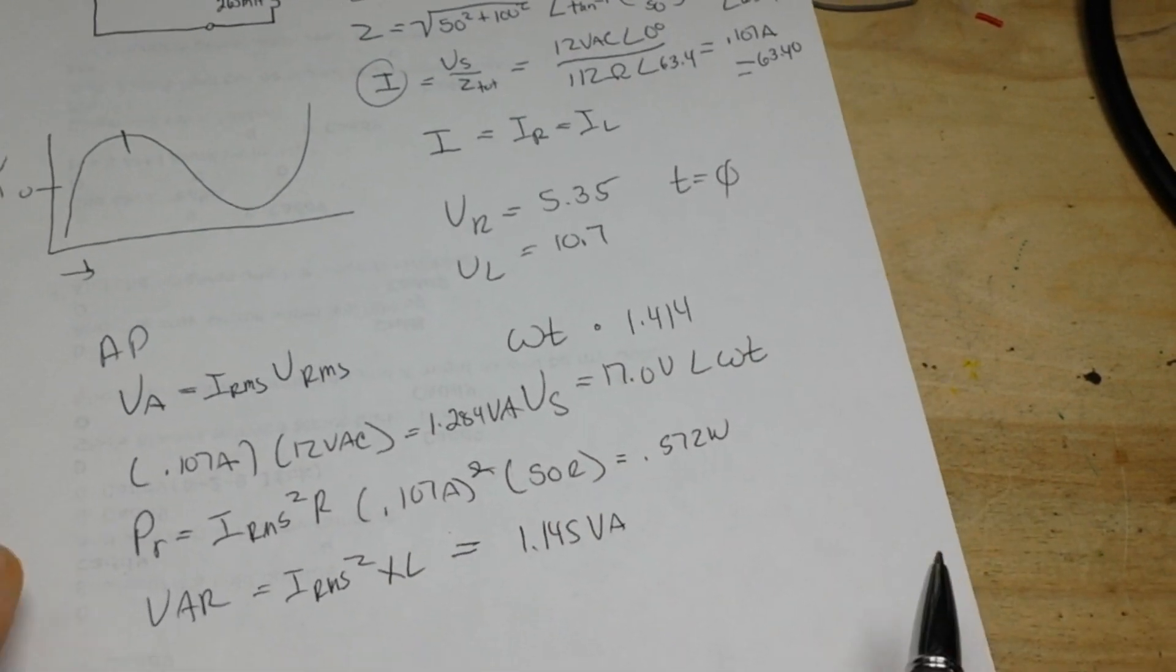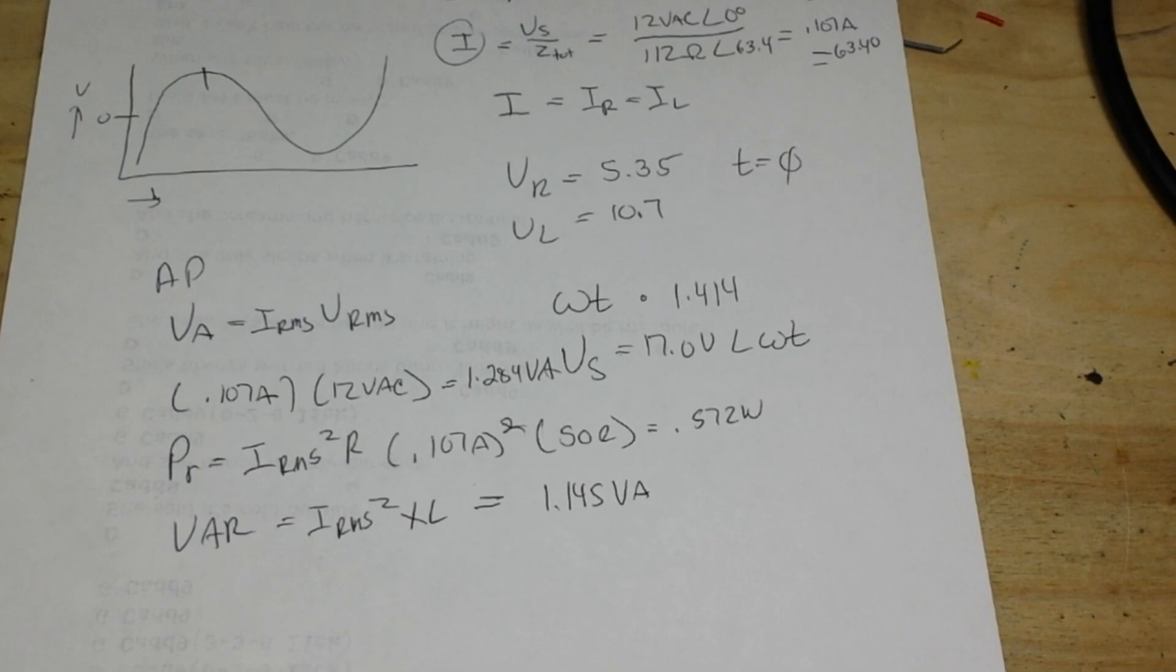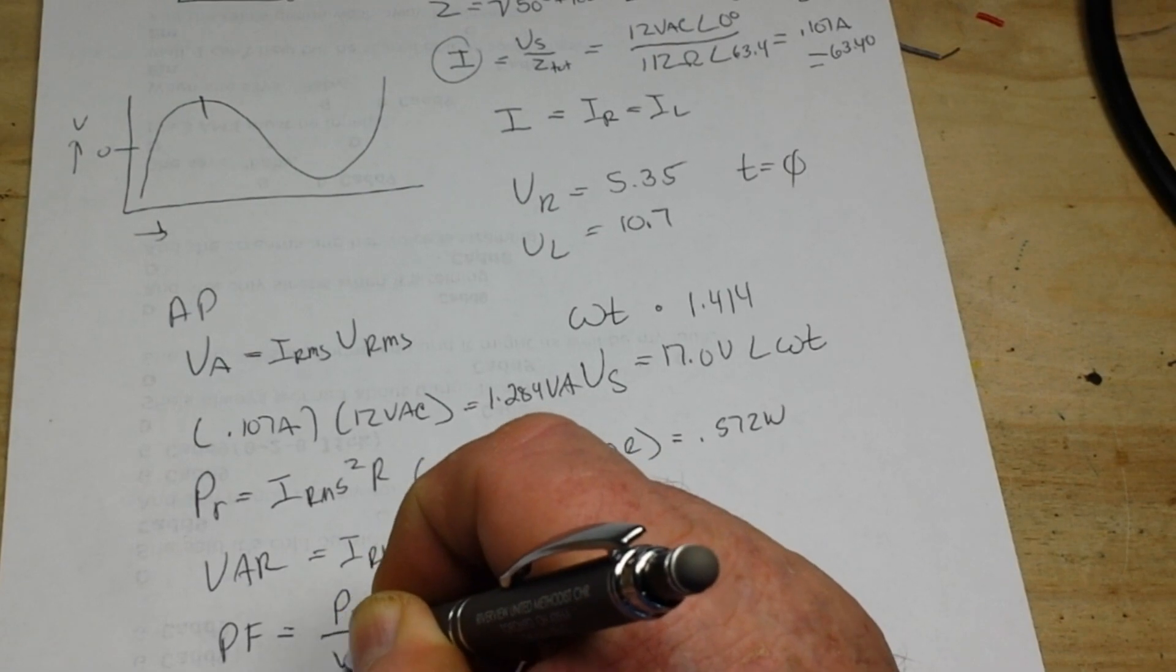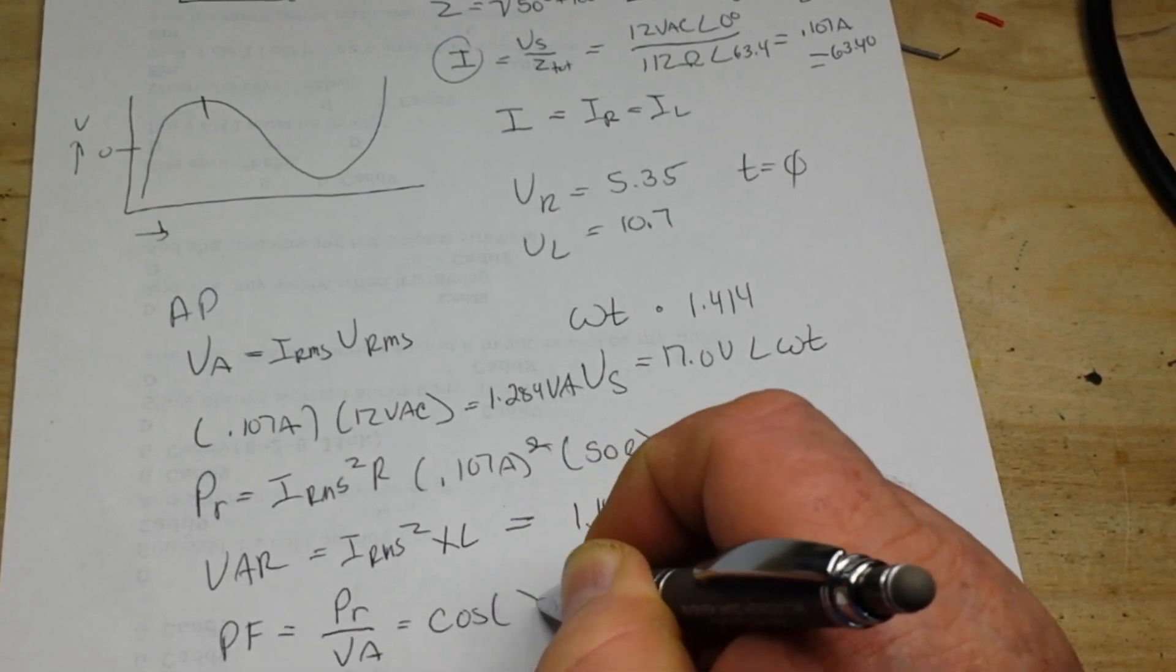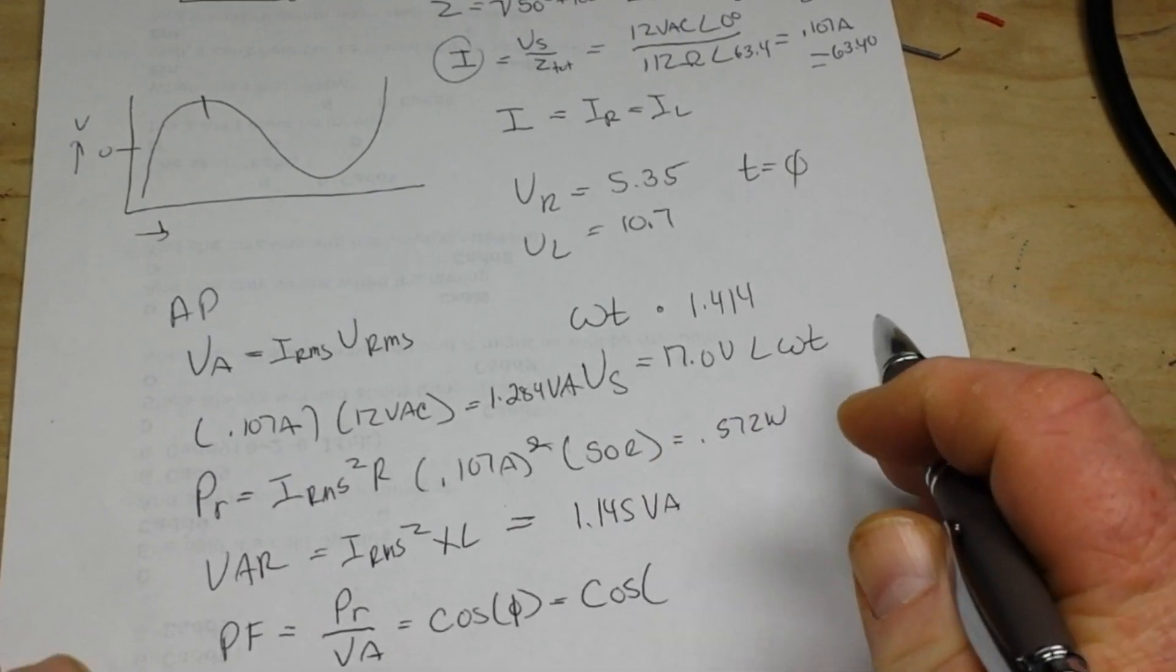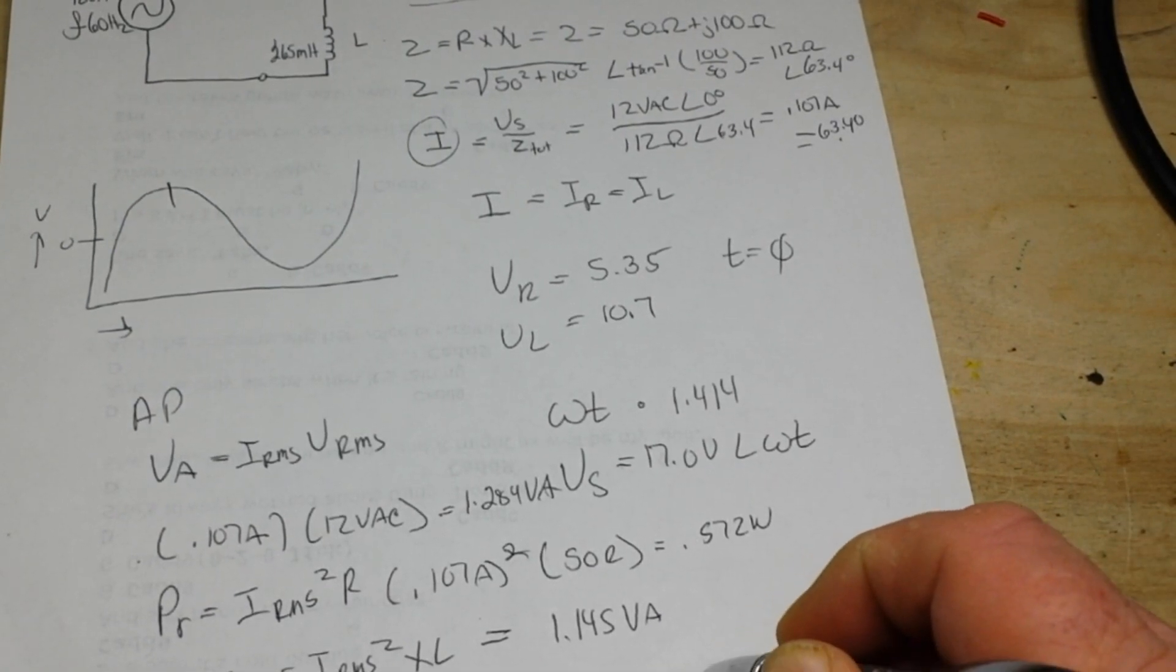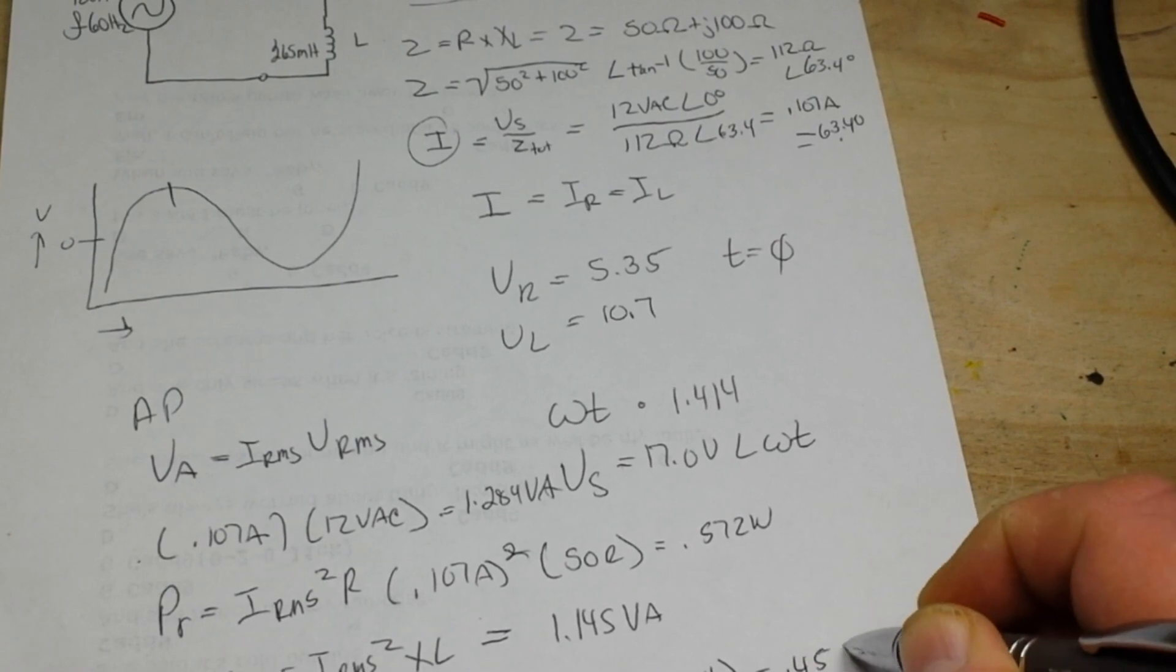So the power factor, the real power—which is a combination of these two things we have been talking about—our power factor is equal to PR over VA, equal to the cosine of phi, which is our angle, our negative 63.4 degrees. And what we get is 0.45 lagging. Phi is the phase angle between our VS and our IS.